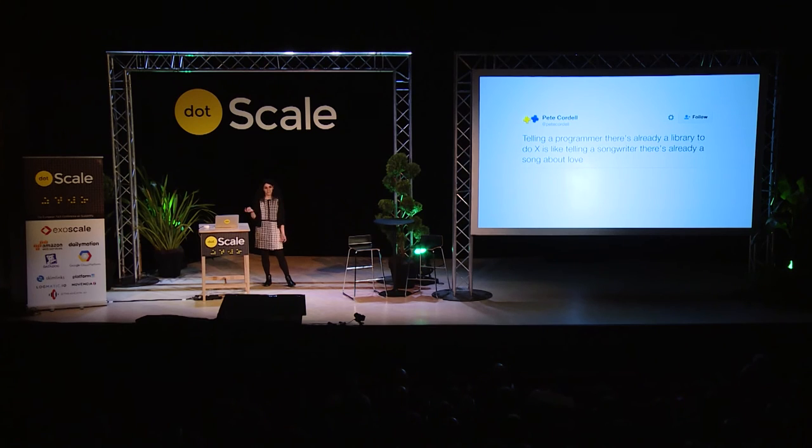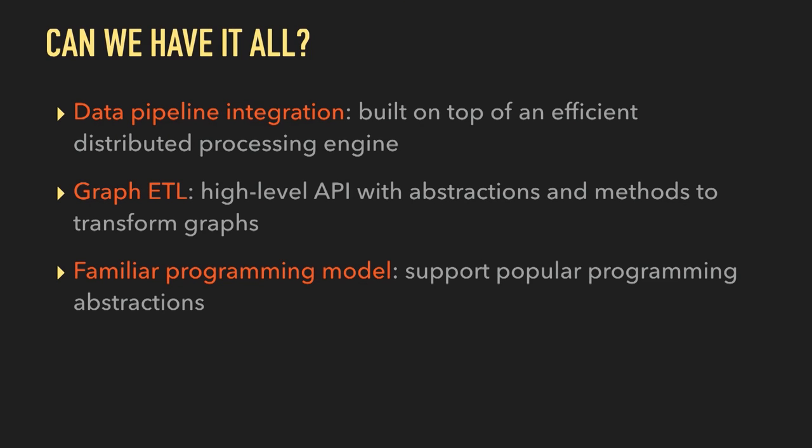My vision is that we need a graph system that can offer multiple of these abstractions. First, we need something that integrates well in the data pipeline — something built on top of a distributed processing engine. We need good tools for graph extraction and transformation, because graphs just don't appear out of nowhere. And we need familiar programming models, and ideally more than one, because we have different categories of graph applications.